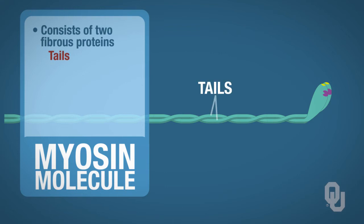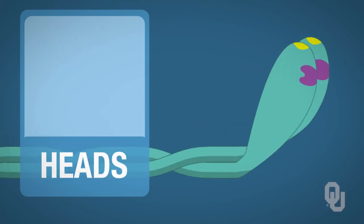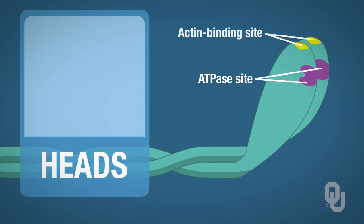The other structure that makes up the one myosin molecule are the heads. The heads are also proteins, but they're globular proteins. Let's take a look at what structures you would find on the heads of the myosin molecule. There are two structures found on each head: the ATPase site and the actin binding site.